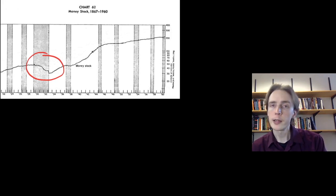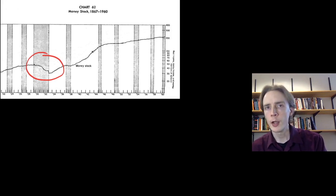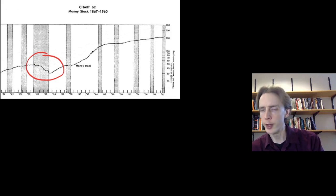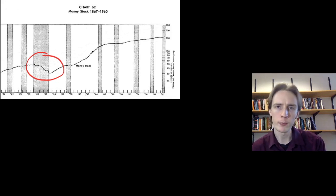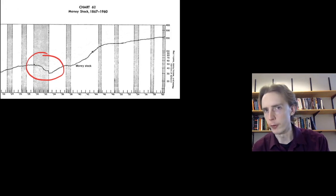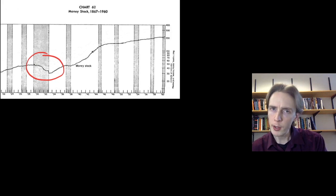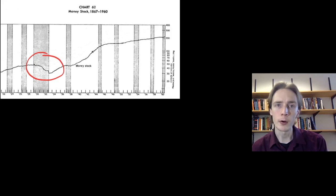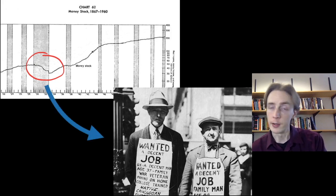This is a graph of the money supply in the United States from about 1920 to about 1960. What you see is that it goes up pretty steadily, except for one spot right around 1930 to 1934 — the Great Depression. The puzzle we want to explore in this unit is: what does monetary policy have to do with things like unemployment, and why would a fall in the money supply make it harder for people to find a job?